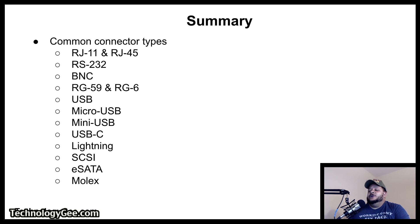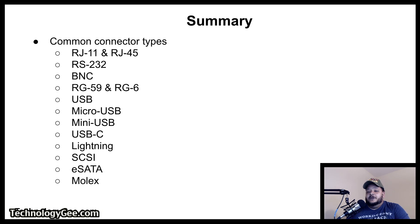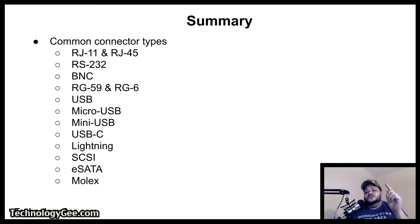In summary, we have talked about RJ11, RJ45, RS232, BNC, RG59, RG6, USB, micro and mini USB, USB-C, Lightning, SCSI, E-SATA, and Molex. If you got something valuable out of this information, please hit the like button, the share button, and drop a comment below. Most importantly, hit the subscribe button and visit my website Technology G to help you successfully pass the CompTIA 220-1001 examination.